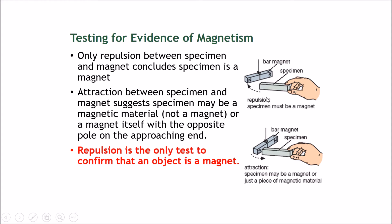The first reaction is repulsion. When I brought this bar close to this magnet, this part of the magnet moves away — it's repulsed. This is the most definitive situation because it confirms that this bar must be a magnet, and this pole must be a north pole. Only a magnet can repel another magnet. Only repulsion between a specimen and a magnet concludes that the specimen is a magnet.